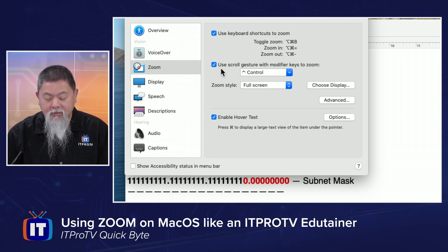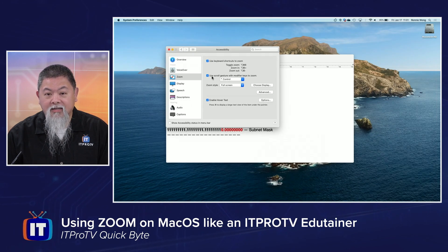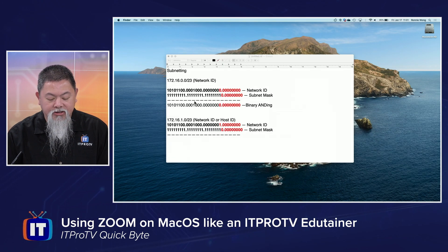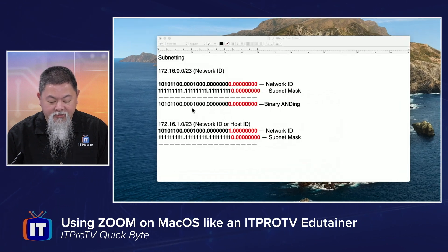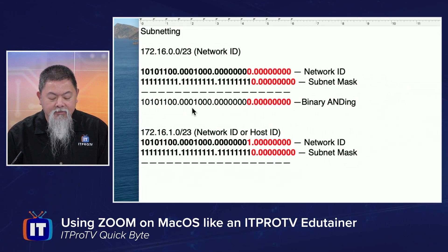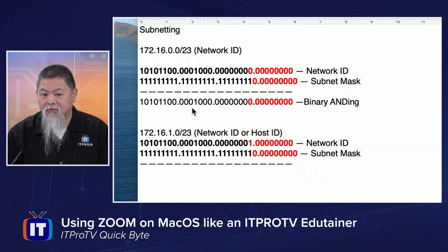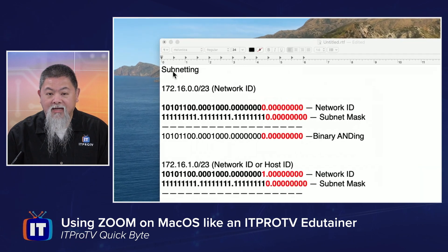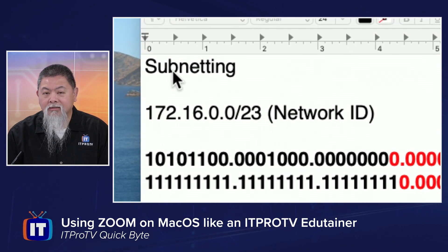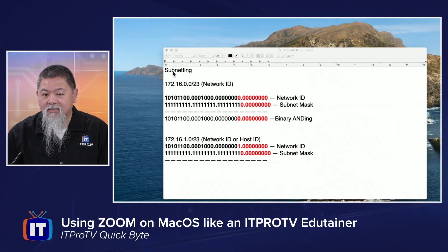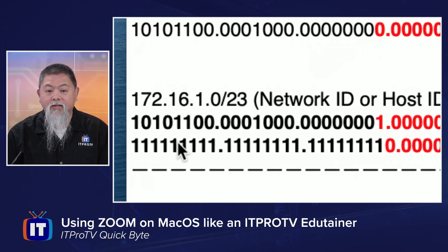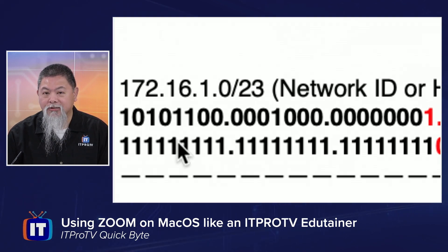I'm going to hold the Control key down, and now on the trackpad, I'm simply going to zoom out like that. Notice it actually is relatively smooth — so if I'm teaching something like subnetting, I can actually zoom in. The key, of course, is knowing where your mouse is, and that is where it will actually zoom to, so you can see on a single document where I can specify what it is that I want to zoom into.